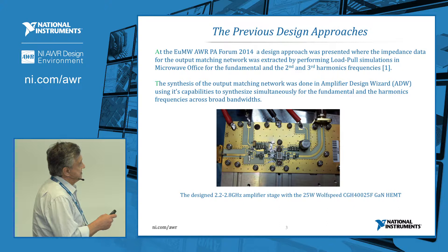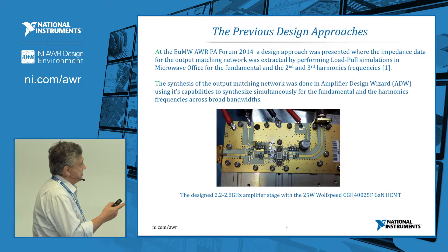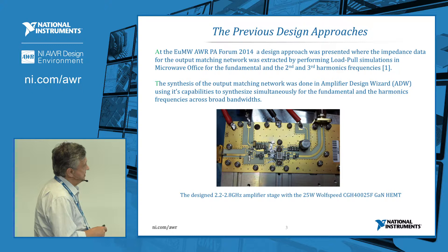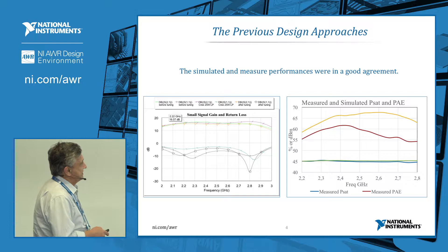The first design shown here had multiple load pull simulations done in Microwave Office for the fundamental, second, and third harmonic frequencies. Matching networks were synthesized by the Amplifier Design Wizard, a development of Peter Abri. This is an amplifier covering 2.2 to 2.8 GHz with a 25-watt Freescale device, and the results are close between simulations and measurements.